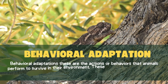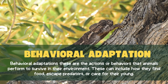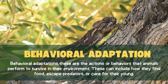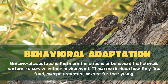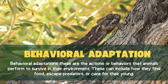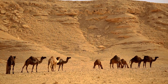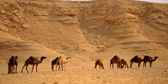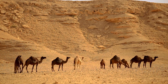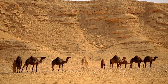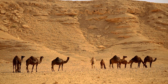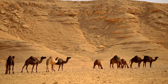Finally, we have behavioral adaptations. These are the actions or behaviors that animals perform to survive in their environment. These can include how they find food, escape predators, or care for their young. Camels are smart — they are primarily active during the cooler parts of the day, such as early morning and late evening. This behavior helps them avoid the extreme heat of the desert sun, conserving energy and reducing water loss.